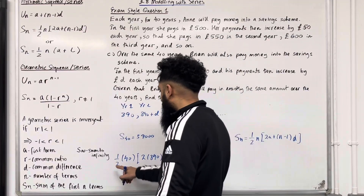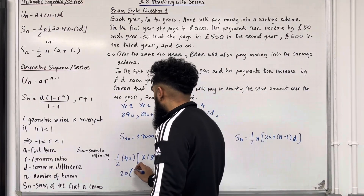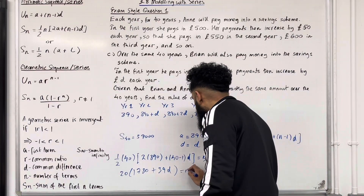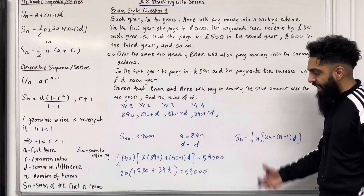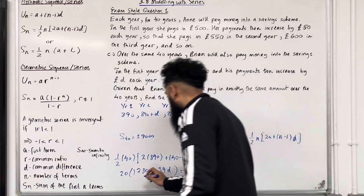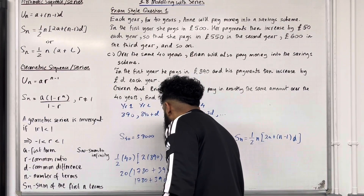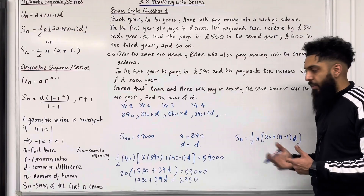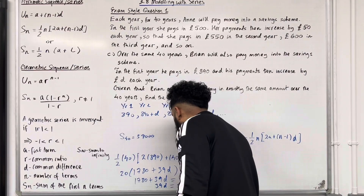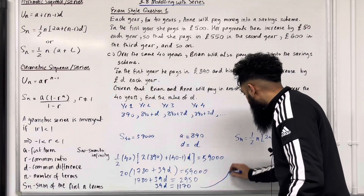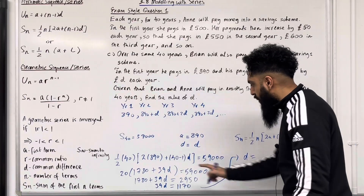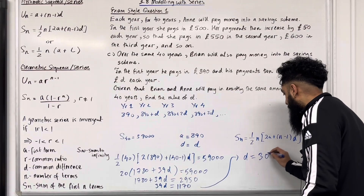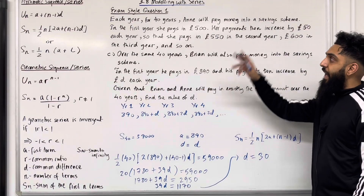Simplifying the left-hand side: ½ × 40 = 20, giving 20(1780 + 39D) = 59,000. Dividing both sides by 20: 1780 + 39D = 2950. Subtracting 1780: 39D = 1170. Therefore D = 1170 ÷ 39 = 30. So D = 30, and that completes part C and exam-style question 1.